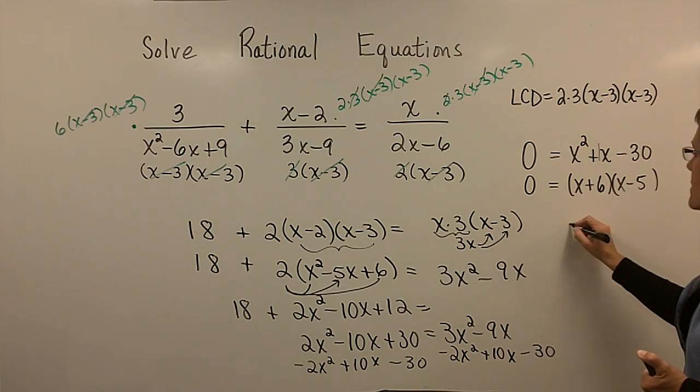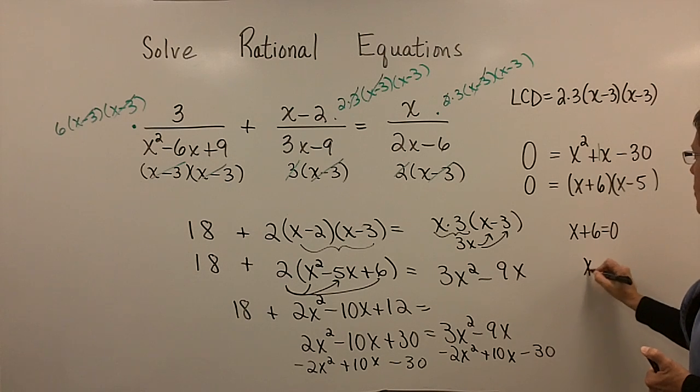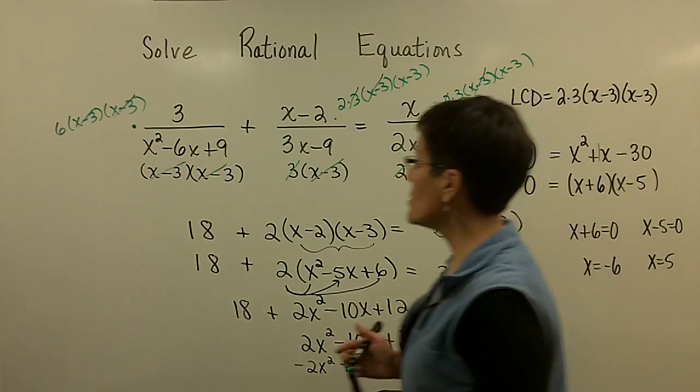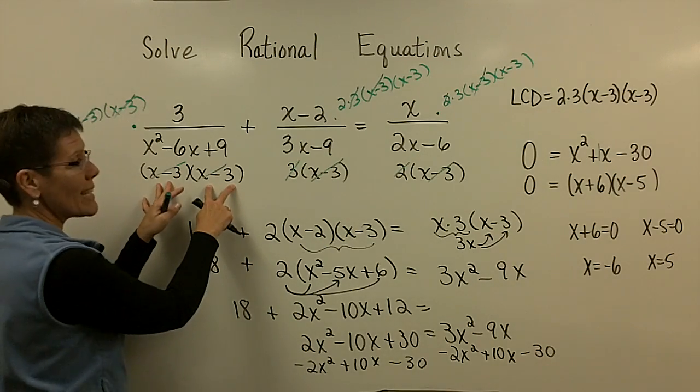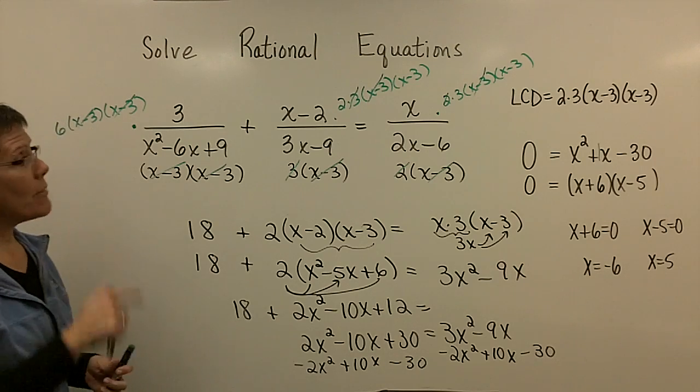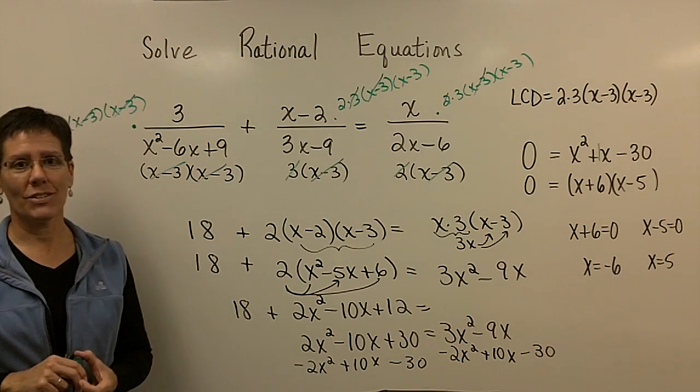And then, the zero product rule says to set the x plus 6 equal to 0. And, therefore, one of my solutions is a negative 6. And then, it says set the x minus 5 equal to 0 and add 5 to both sides. And one of my solutions is a positive 5. My restrictions for this problem was just x cannot equal a 3. That's the only value x cannot equal. I have checked these. These do work. These are the two solutions to this rational equation.